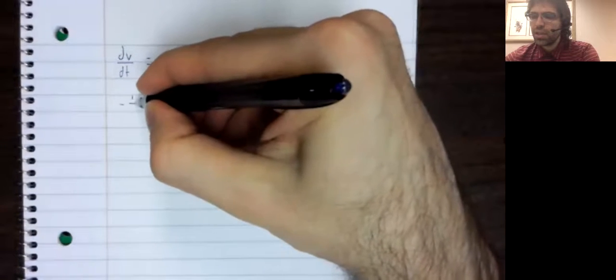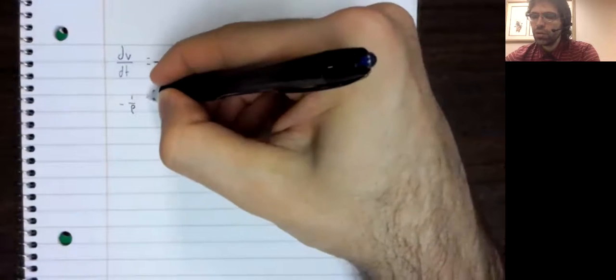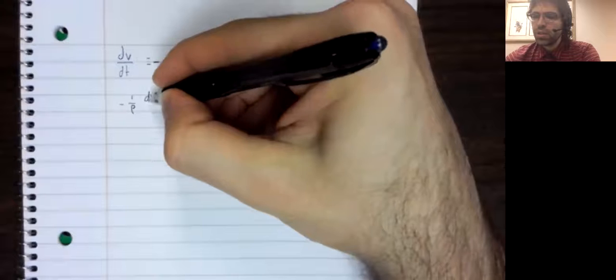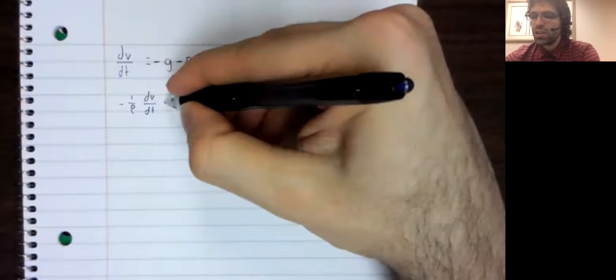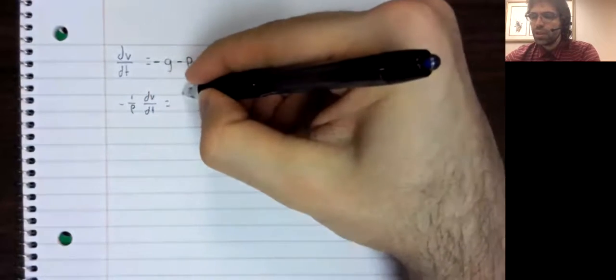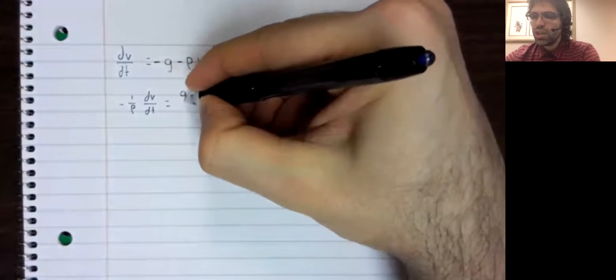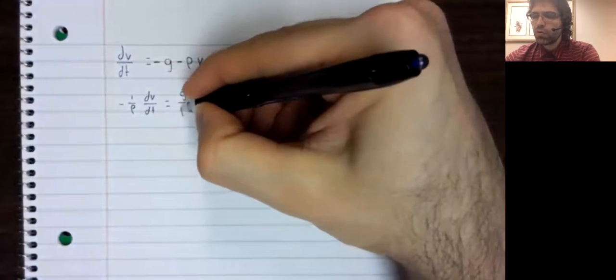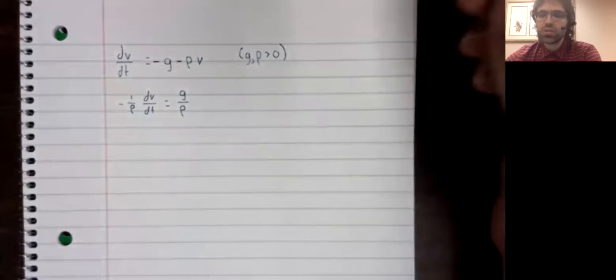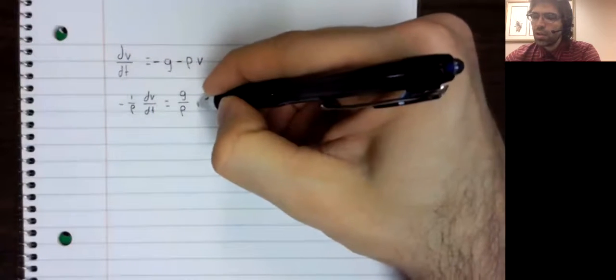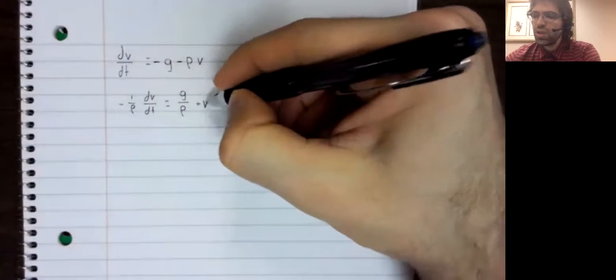Negative one over rho dv/dt equals g over rho. The negative signs cancel, plus v.